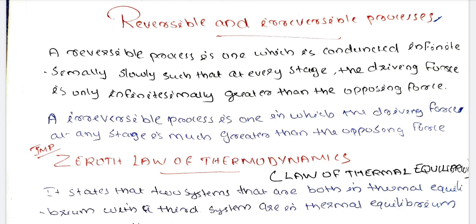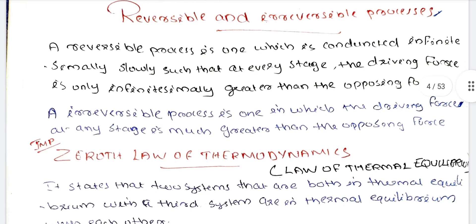The definition of a Reversible Process: it is conducted infinitesimally slowly such that at every stage the driving force is only infinitesimally greater than the opposing force. An Irreversible Process is one in which the driving force at any stage is much greater than the opposing force.